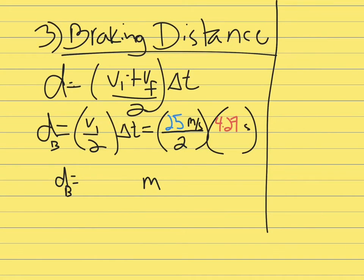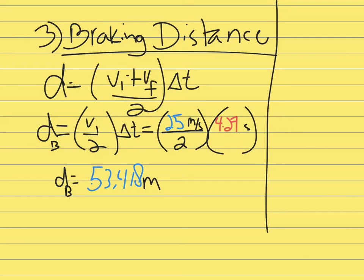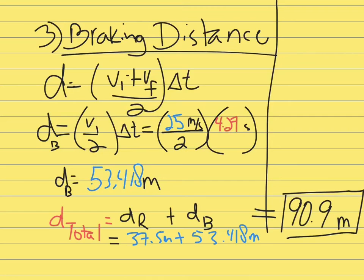Now we use the braking distance formula: distance = (V1 + Vf) / 2 × Δt. Because Vf is zero, it simplifies to V1 / 2 × Δt, which is 25 m/s divided by 2 times 4.27 seconds, giving 53.484 meters. Adding the reaction distance of 37.5 meters to the braking distance of 53 meters, the total stopping distance is 90.9 meters.